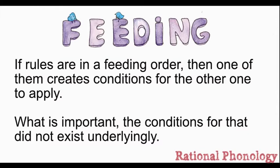Let's have a look at feeding. If rules are in a feeding ordering, then one of them creates conditions for the other one to apply. What is important is that the conditions for that did not exist underlyingly.